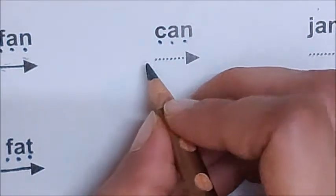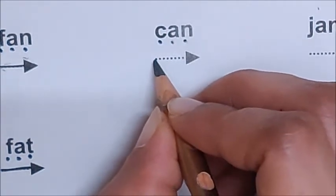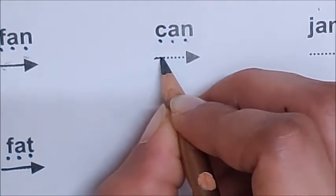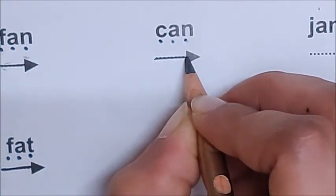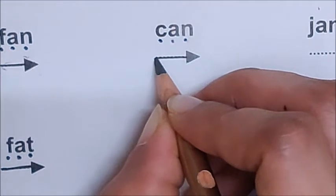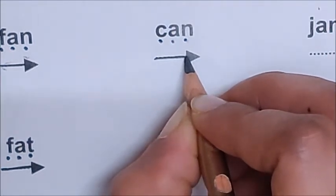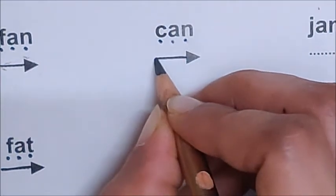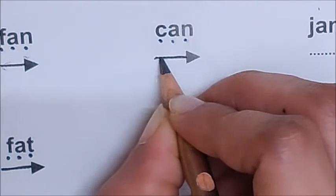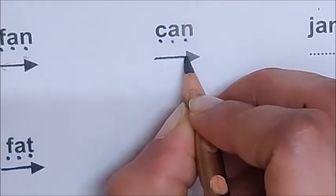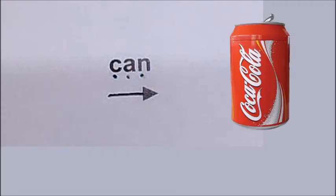So put one dot for N. Now join and read. K - A - N. Can. Children, this is a can. This is a Coca-Cola can.